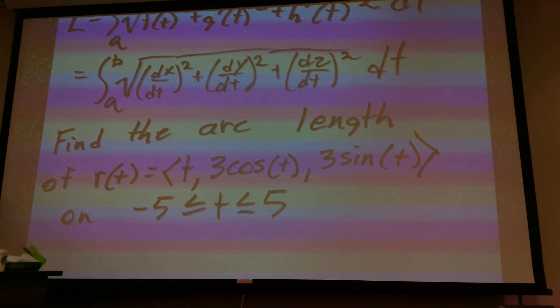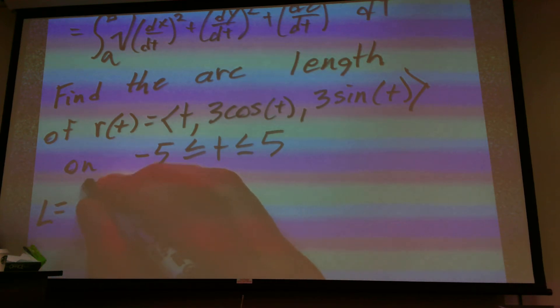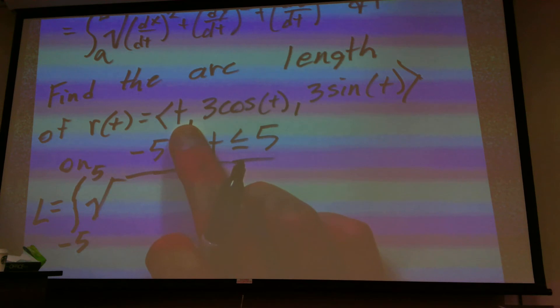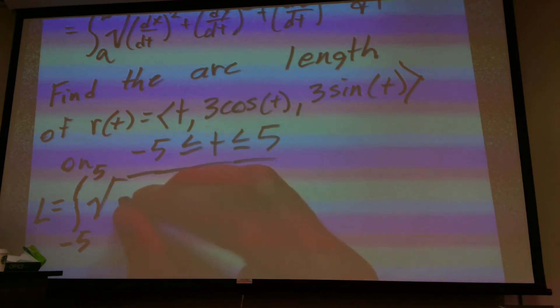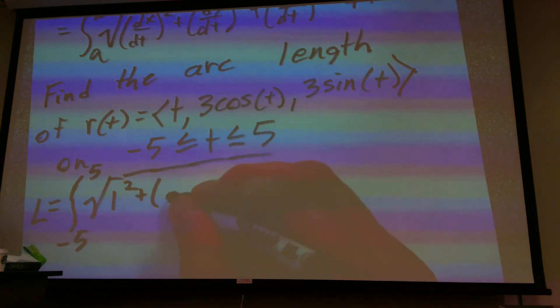So, the length of this guy right here would equal the integral now from negative five to five of the square root. Now, the derivative of t is just going to be one, so we put one squared right there. Now, we're going to take the derivative of cosine, which is going to be negative sine. So that's going to be negative three sine of t squared.